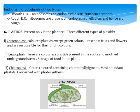Next we come to plastids. Plastids are present only in plant cells — they are not present in animal cells. There are three types of plastids: chromoplast, leucoplast, and chloroplast.